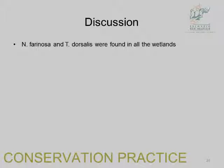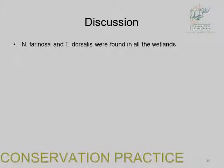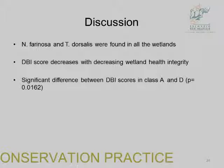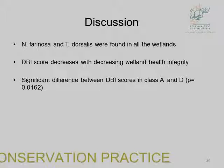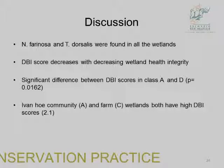Two dragonfly species were found in all wetlands sampled, which shows they cannot be used as bioindicators of wetland health. The DBI scores decreased with decreasing WET-Health integrity, and there was a significant difference between DBI scores in class A and D. The study suggests that more work needs to be done at a bigger scope, but it does indicate that DBI scores have the potential to be used as bioindicators of wetlands.